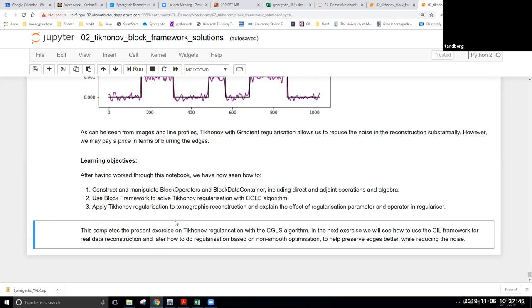The fourth one we'll have, we'll be using TV regularization, where I guess the motivation for that is, well, we still want to try and lose some of our noise, but we also want to try and preserve our edges a bit better, which is tricky with Tikhonov. So we'll get to that in the fourth exercise. Any questions, comments at this point?